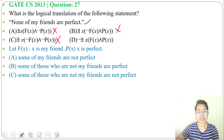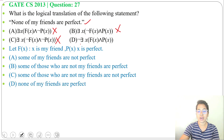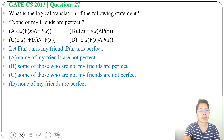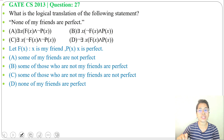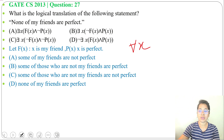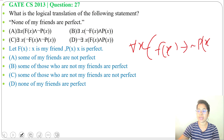The only option left is option D: negation of there exist x, f(x) and p(x) — which means none of my friends are perfect. None of my friends are perfect means all my friends are not perfect. Since it involves 'all,' it will use the universal quantifier. So, for all x who are my friend, f(x) implies negation of p(x).